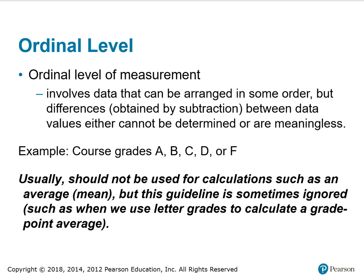The ordinal level of measurement involves data that can be arranged in some order, but differences obtained by subtraction between data values either cannot be determined or are meaningless. For example, course grades A, B, C, D, or F. Usually we should not use ordinal data for calculations such as average or mean, but this guideline is sometimes ignored, such as when we use letter grades to calculate a grade point average.